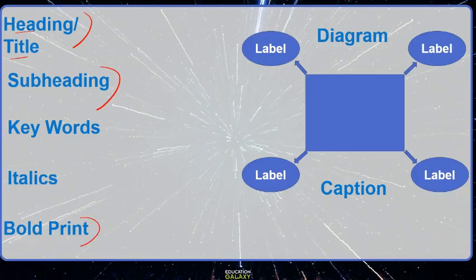Keywords are important words that the author draws attention to in a text. These are often written in italics or in bold print. Text features also include pictures like diagrams or photographs. You often see diagrams with different labels — each label tells you what the different part means. And captions are words underneath the picture that tell you more about what you should be looking at.